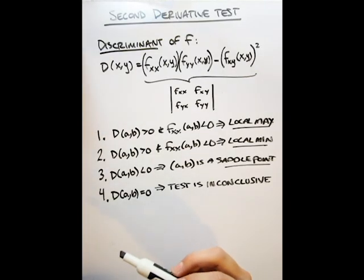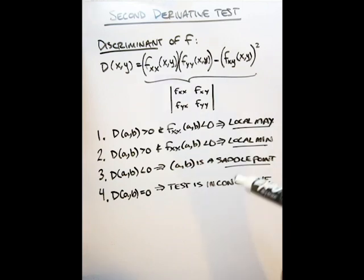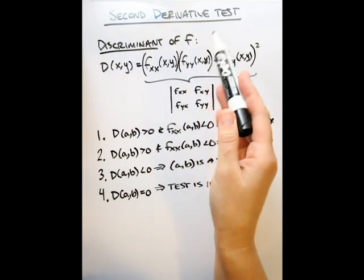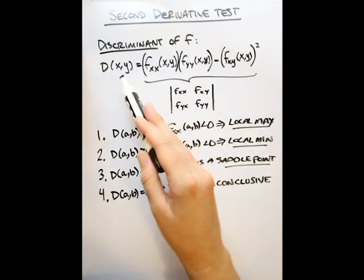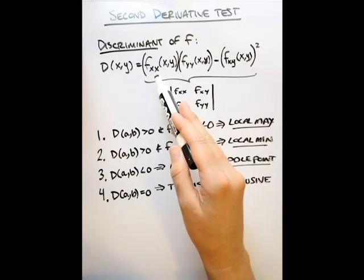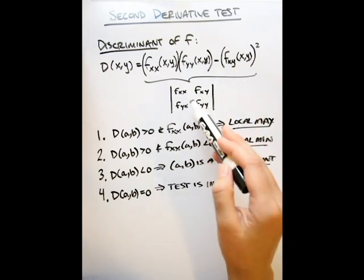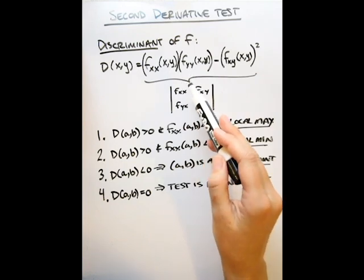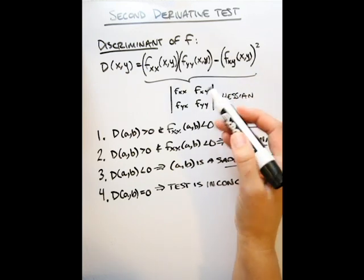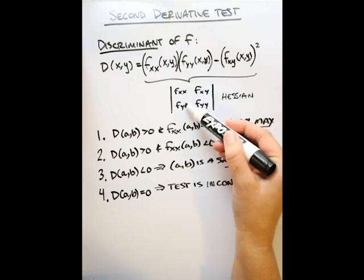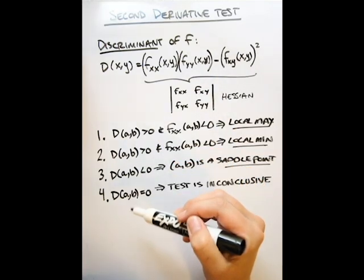Now that we know how to find critical points, we use a second derivative test to figure out if those points are local maximums, minimums, saddle points, or none of those. We need what's called the discriminant D of our function f, which equals the product of the second-order partial derivatives f_xx and f_yy minus the square of the mixed second partial derivative f_xy. This is actually the determinant of the 2x2 Hessian matrix. For a continuous function, the mixed second-order partial derivatives are equal, which is why the mixed term is squared.